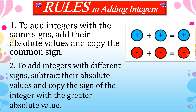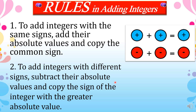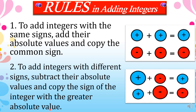For our next rule, to add integers with different signs, subtract their absolute values and copy the sign of the integer with the greater absolute value. If the sign of the integers are different, you are going to subtract their absolute values or the numbers, and then copy the sign of the integer with greater absolute value. The positive bubble that is bigger than the negative bubble means you copy the positive sign. And if the negative bubble is bigger than the positive bubble, you copy the negative sign.